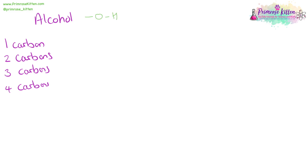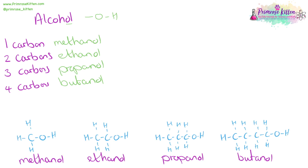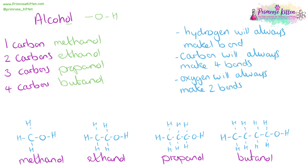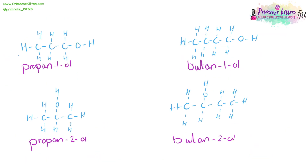Alcohols have an OH functional group and they end in -ol. One carbon is methanol, two carbons is ethanol, three carbons is propanol, four carbons is butanol. When drawing alcohols, we need to put our OH groups on, and make sure everything has the right number of bonds — hydrogen makes one bond, carbon makes four bonds, and oxygen makes two bonds. Propan-1-ol has the alcohol group on the end. Butan-1-ol has the alcohol group on the end. Propan-2-ol has it in the middle. And butan-2-ol has it in the middle. Learn these and recognise them.